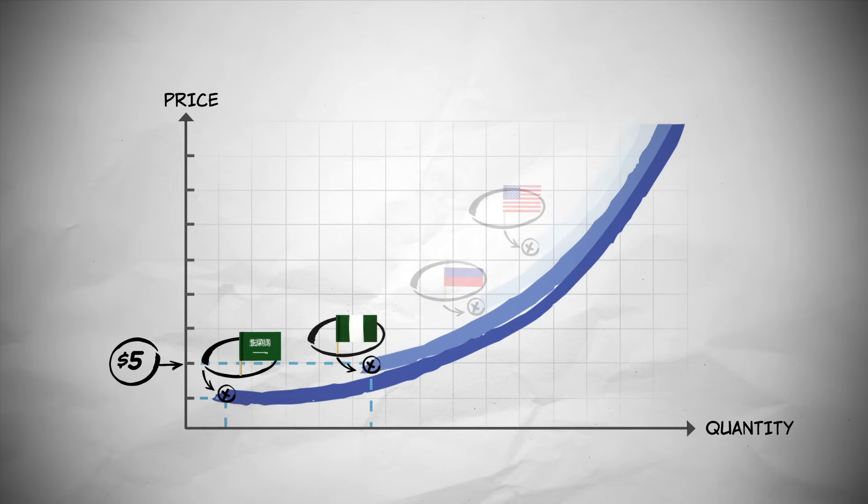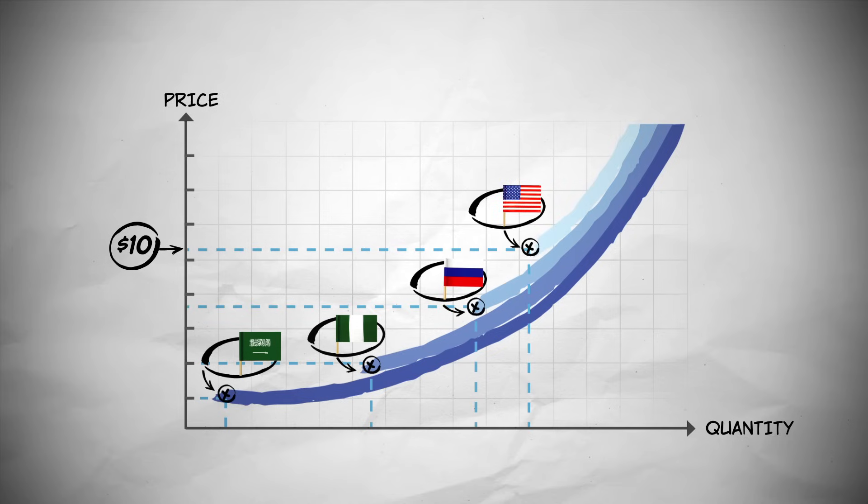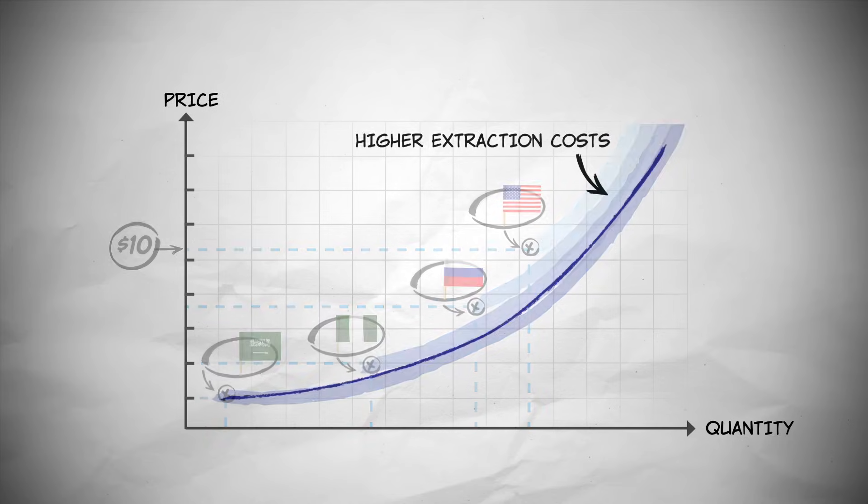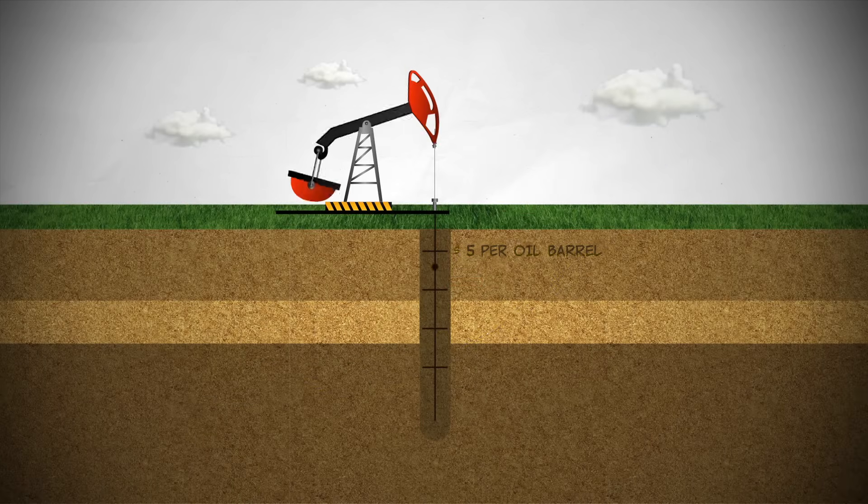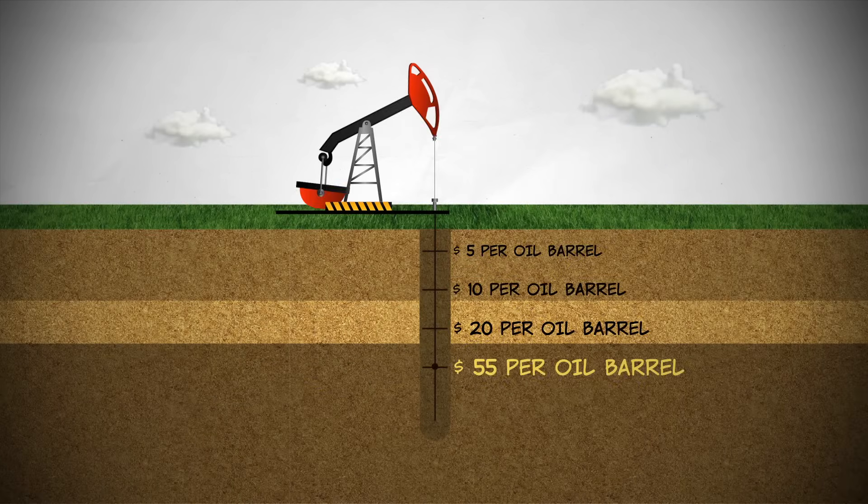As the price gets higher, even the most expensive extraction techniques become profitable. The supply curve slopes upward because the only way the quantity of oil can be increased is to exploit higher and higher cost sources of oil. As the price of oil goes up, the depth of the oil wells goes down.